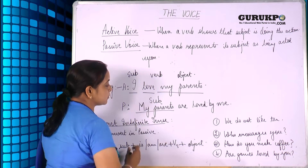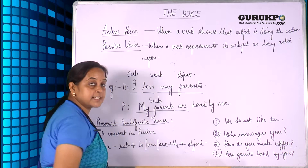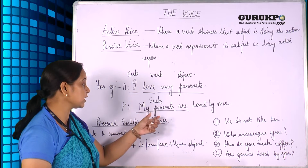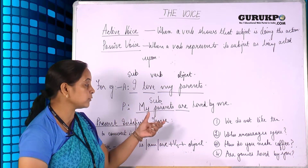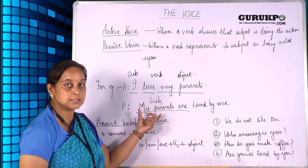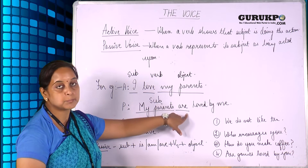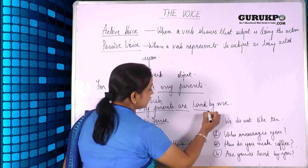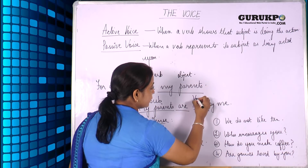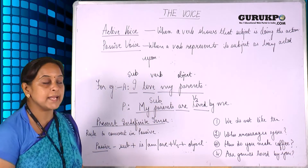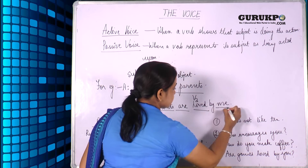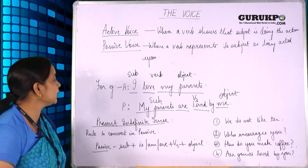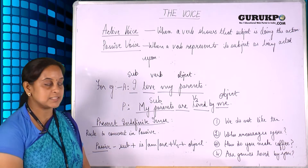My parents is the subject, and we will place 'is,' 'am,' or 'are' depending on the subject. If the subject is plural — here 'my parents' is plural — so we will place 'are' after this. And the third form of the verb, which is 'loved,' is used here, followed by 'by me,' which is the object. In this way, we convert from active voice to passive voice.